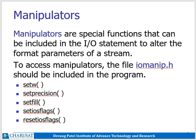Next we will see various manipulators, which are the second category of formatted console input output operations. Manipulators are special functions that can be included in input output statements to alter the format parameters. To access manipulators, the file iomanip.h should be included in the program. The various manipulators are: setw, setprecision, setfill, setiosflags, and resetiosflags. These manipulators are equivalent to the various ios functions — for example, setw is equivalent to width, setprecision to precision, setfill to fill, and setiosflags to setf.